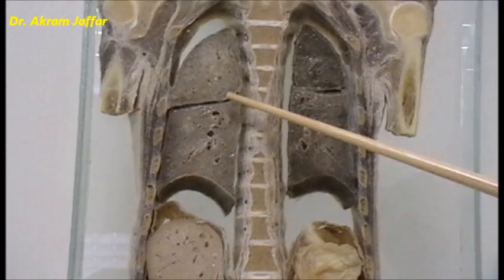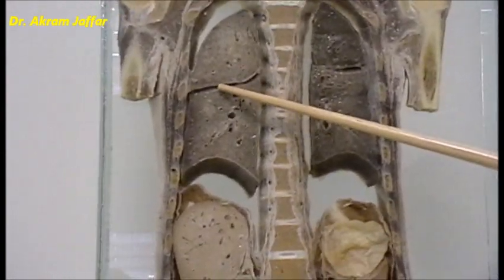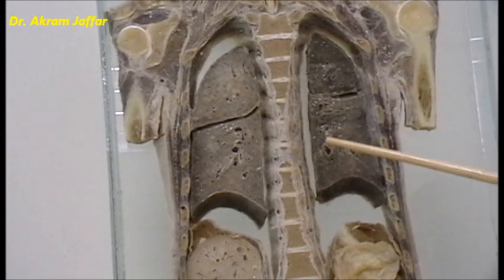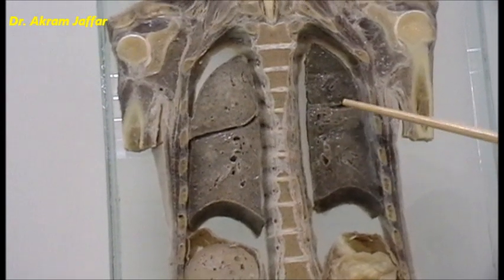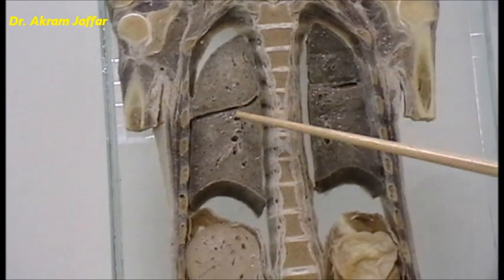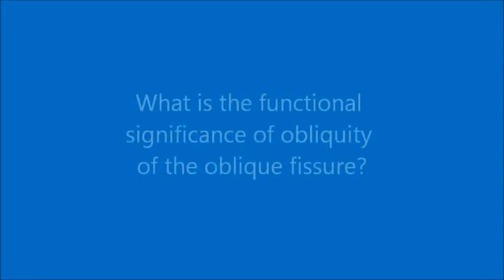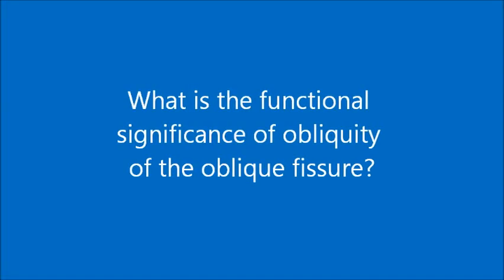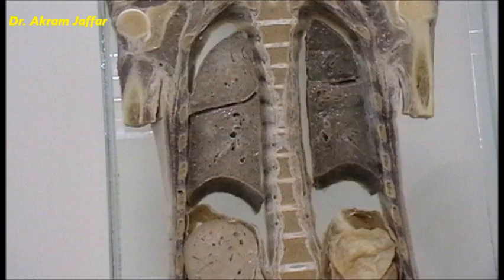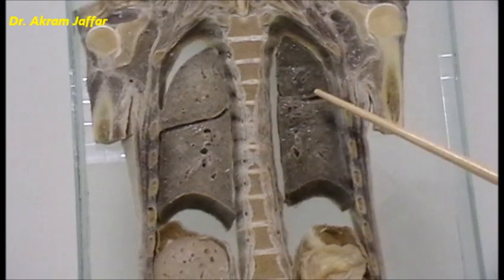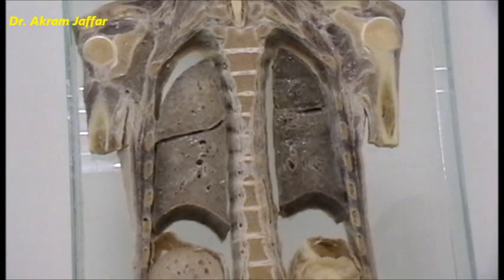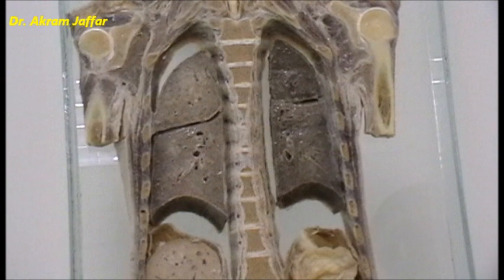I want you to notice the level of the oblique fissure. As we are going further back, the level of the oblique fissure is getting higher and higher, which indicates that the fissure is not horizontal — it is oblique. That's why it appears at different levels in different sections. So the level of the oblique fissure was a little bit lower in the previous section and will be a little bit higher in the next section, which is a more posterior section.